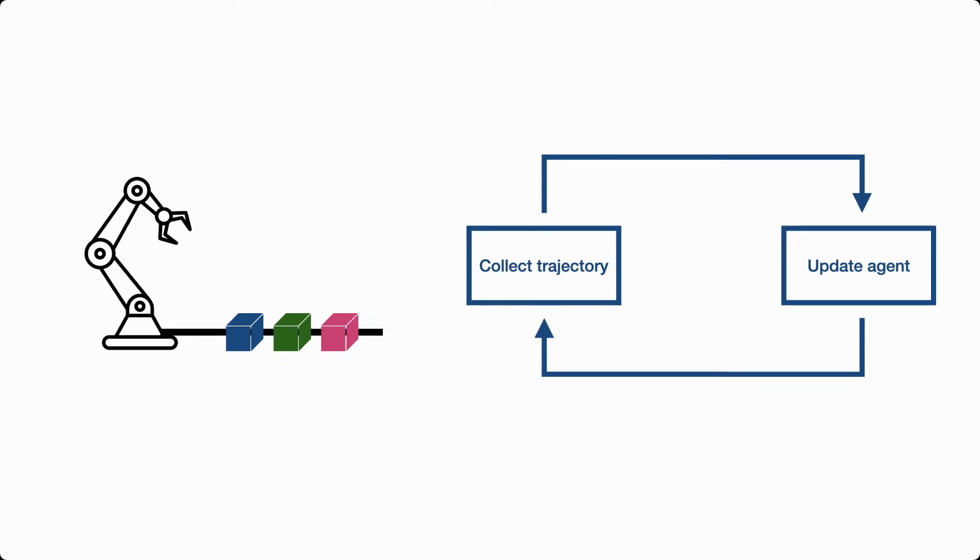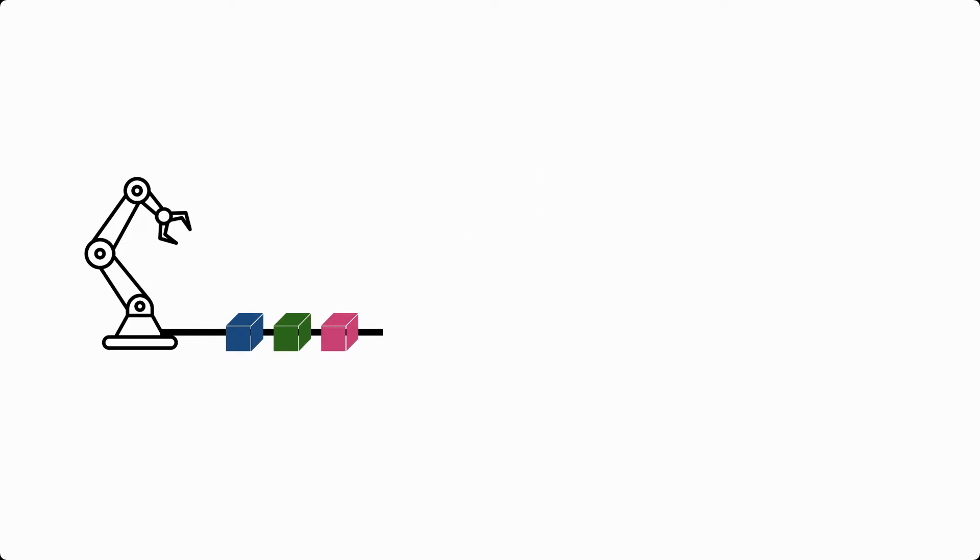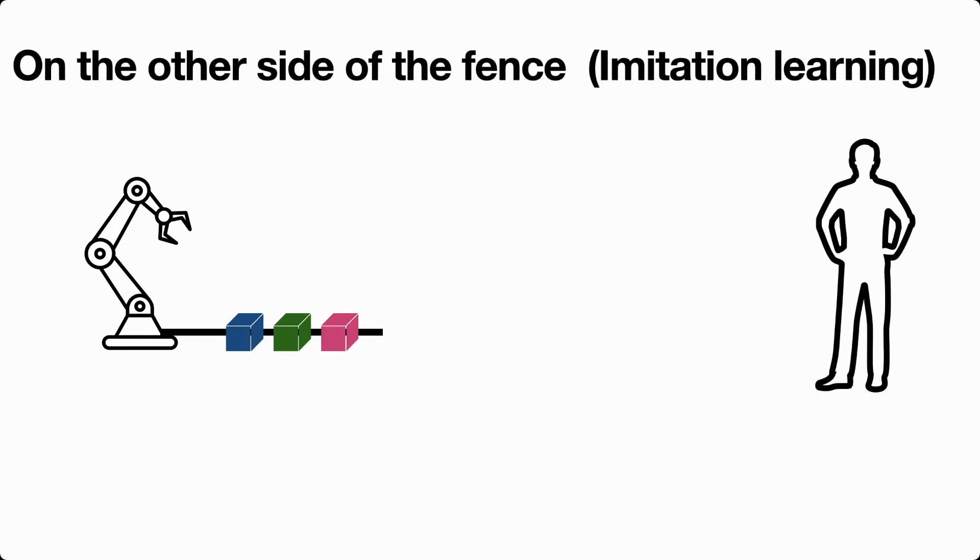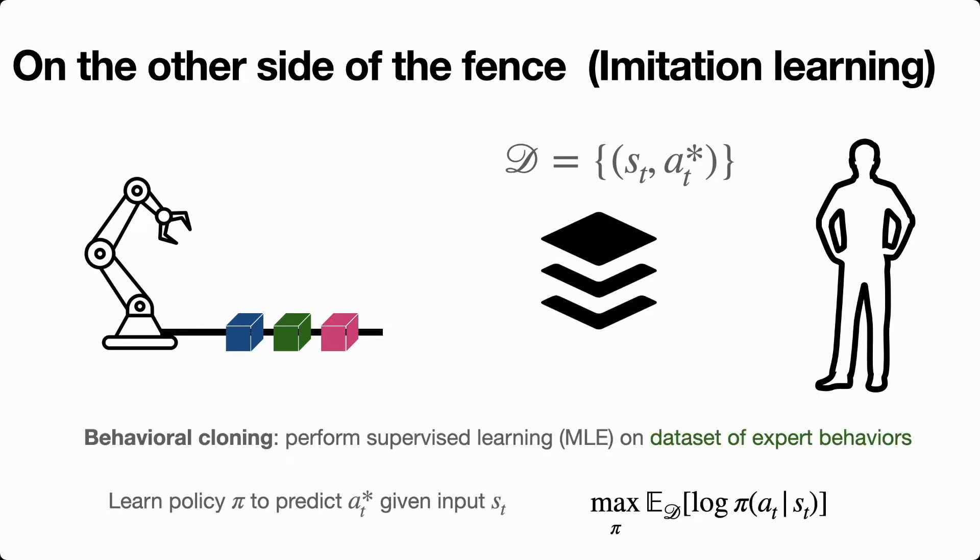Suppose that instead of needing to learn through feedback, we had access to a human expert. This corresponds to the imitation learning setting where there's a very simple way of turning policy learning into a supervised learning problem. If the expert provides us a data set of optimal demonstrations, we can run behavioral cloning, which trains our neural network policy on this data set using supervised learning, predicting the optimal action given the state.